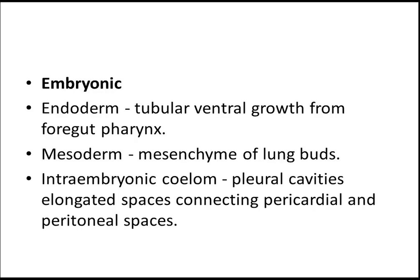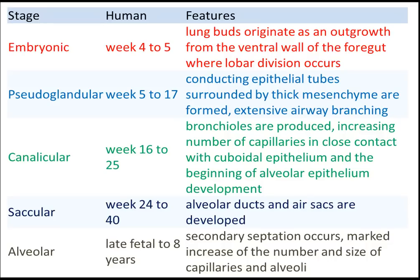Look at the endodermal derivatives: tubular ventral growth from the foregut pharynx, mesodermal mesenchyme of lung buds, then from intra-embryonic pure cavities — elongated spaces connecting the pericardial and the peritoneal spaces. This is a very important table you should memorize. It covers embryonic development from human four weeks to five weeks.